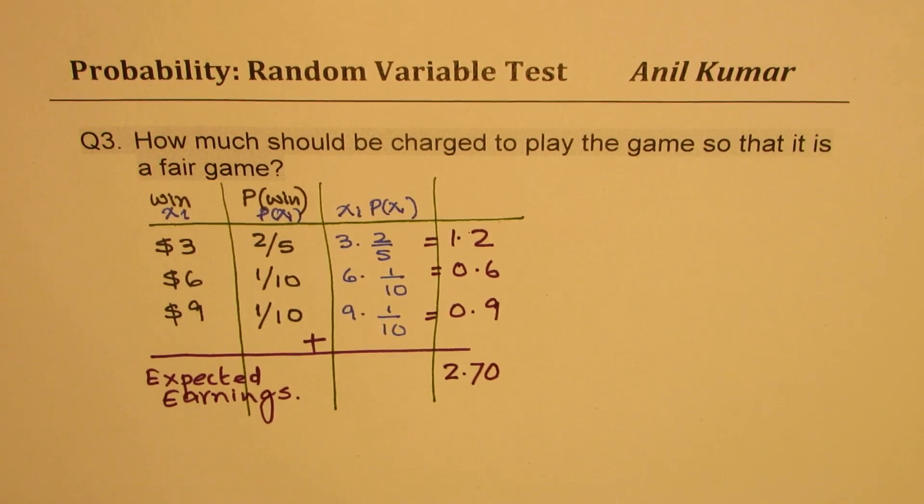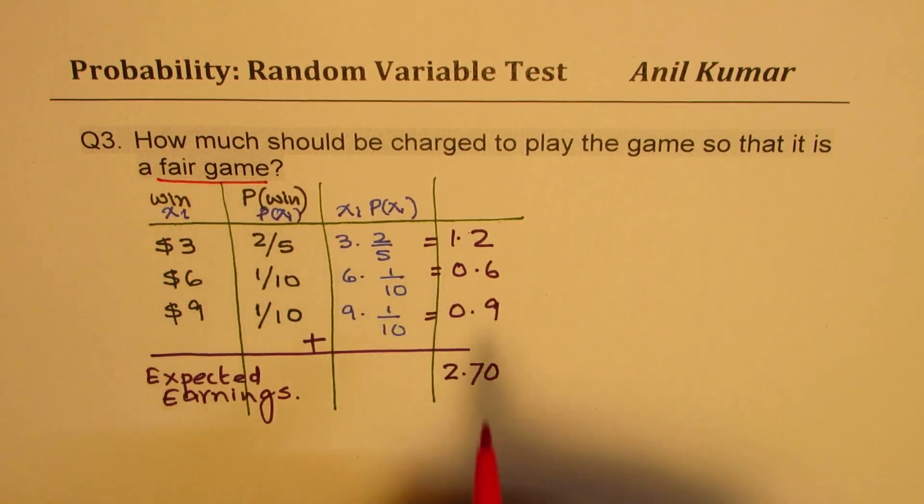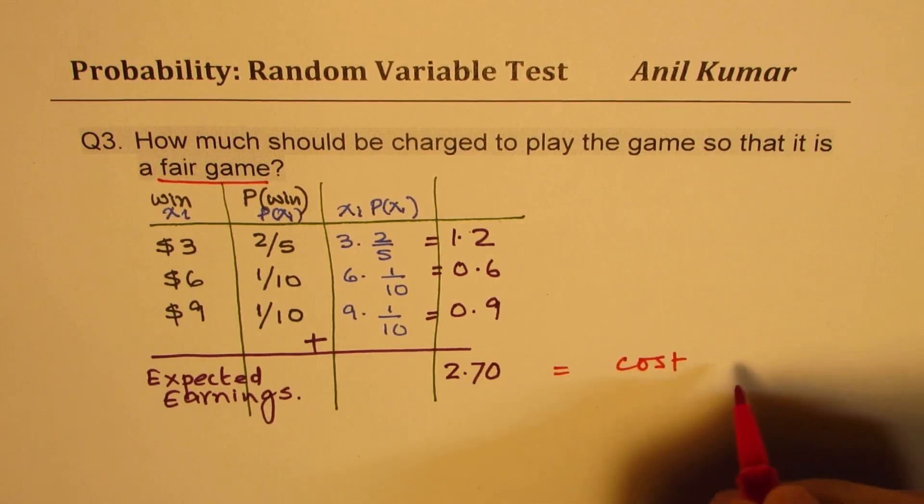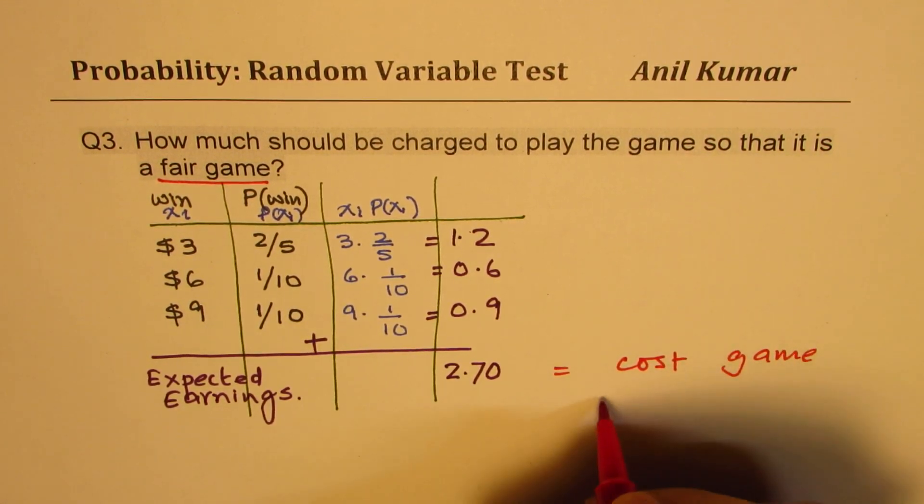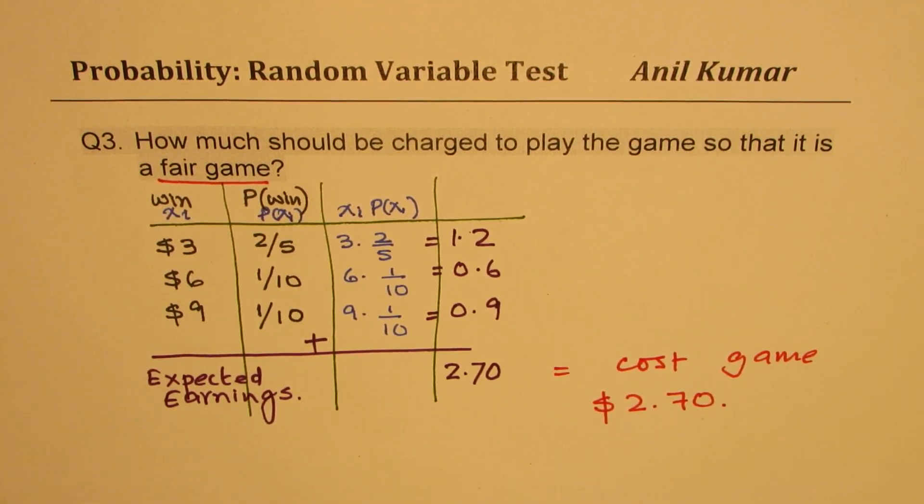So for a fair game, the cost of game should be $2.70. That makes sense. Do you get the idea? So that is how we should be solving such a question. I hope it helps. Feel free to write your comments, share your views, and if you like and subscribe to my videos, that'd be great.